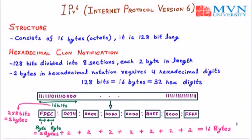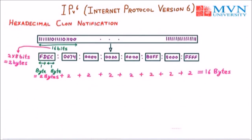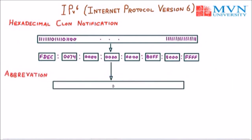Next we have abbreviation in hexadecimal colon notation. A particular IPv6 address can be abbreviated. For example, if we have 4 zeros repeated — like 0000 — we can remove all the leading zeros and provide a simpler address. We remove only leading zeros, not trailing zeros. So FDEC remains the same. From 0074, we remove the leading two zeros and keep only 74. Groups of 0000 become a single 0. So all leading zeros are removed in this abbreviation.